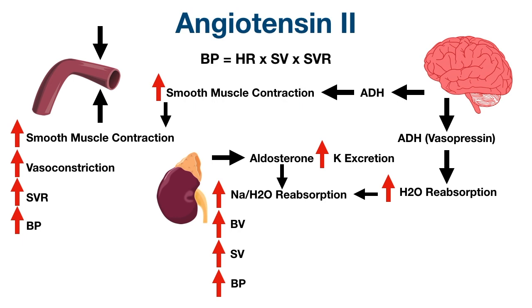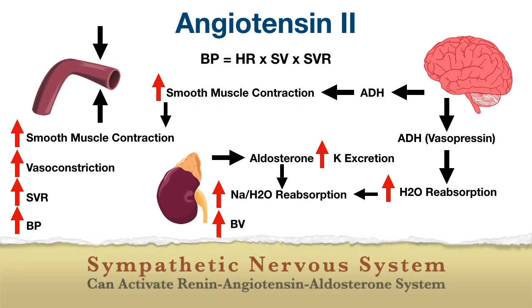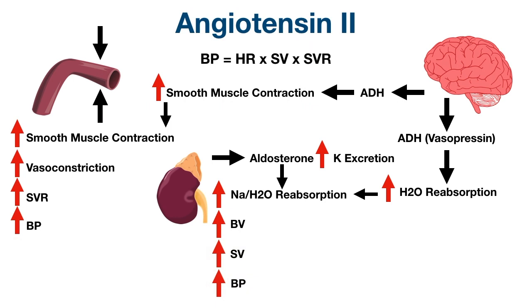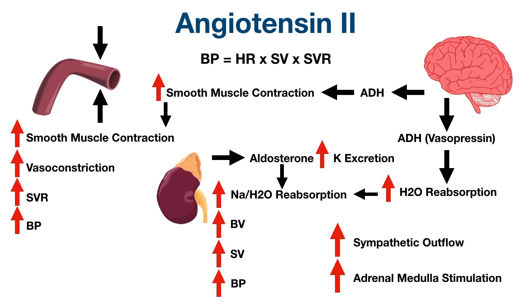You can see how this all ties together. The sympathetic nervous system can activate the renin-angiotensin-aldosterone system by stimulating JG cells to release renin. And angiotensin 2 can then go back and affect the sympathetic nervous system by increasing sympathetic outflow centrally. Angiotensin 2 can also stimulate the adrenal medulla to secrete epinephrine and norepinephrine, which are the main catecholamines of the sympathetic nervous system.